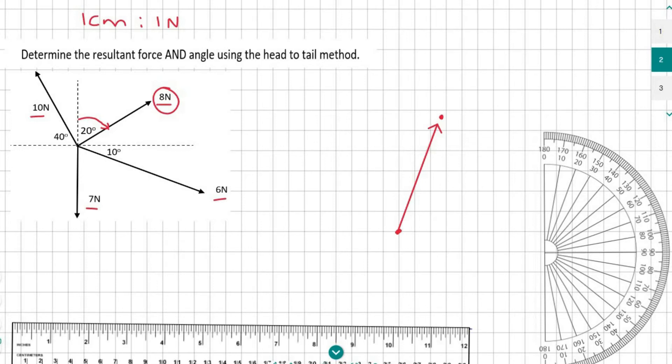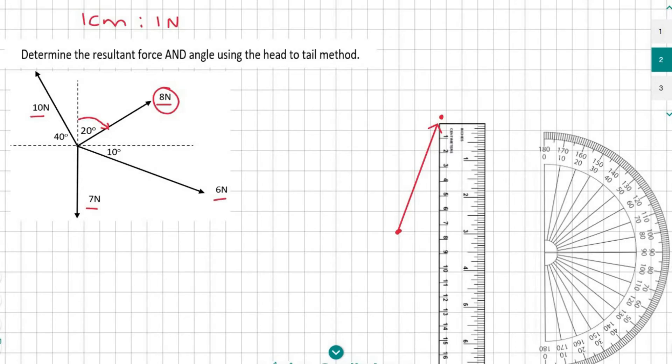The next one I'm going to choose is the 10 newton force. Actually, no, I'm going to do the 7 newton force, which goes straight down. Notice that I'm starting at the same place where I just finished with the previous force. There I've gone 7 centimeters down.